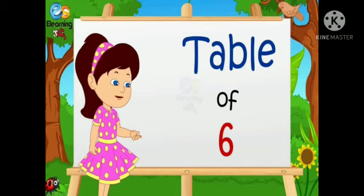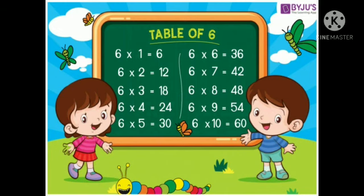Students, now let's revise some tables. We are going to revise the table of six. 6 ones are 6, 6 twos are 12, 6 threes are 18, 6 fours are 24, 6 fives are 30, 6 sixes are 36, 6 sevens are 42, 6 eights are 48, 6 nines are 54, 6 tens are 60.